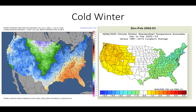The third colder than normal winter we'll examine is December 2002 to February 2003. Notice the below normal temperatures in green from the Ohio River Valley up to New England and down into the southern U.S. and Florida, with above normal temperatures west of the Rocky Mountains to the west coast. In October 2002, there were below normal temperatures across the northern plains and New England, but above normal temperatures across the mid-Atlantic down to the southeast — yet a colder than normal winter still followed.